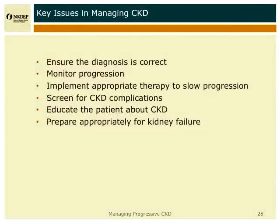So what are the key issues in managing people with diabetes and CKD? One is to ensure that their diagnosis is correct. Just because someone has diabetes and kidney disease doesn't mean their kidney disease is from diabetes, and that's particularly true in populations with high rates of diabetes. If 50 percent of your patient population has diabetes, that means 50 percent of the people with lupus will also have diabetes. So you need to do a screening evaluation, which I'll talk about briefly.